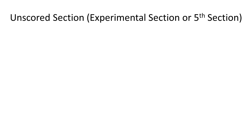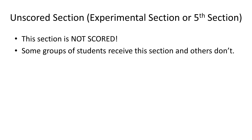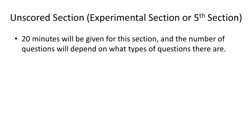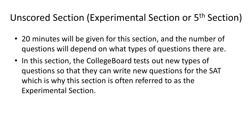Now I'm going to be talking about the unscored section, also called the experimental section or fifth section. This section is not scored. Some groups of students receive this section and others don't. All the questions will be from one of the following parts of the test: the Reading Test, the Writing and Language Test, the Math Test No Calculator, or the Math Test Calculator. However, there will be new questions. 20 minutes will be given for this section and the number of questions will depend on the types of questions. The College Board tests new question types here so that they can write new questions for the SAT, which is why it's often referred to as the experimental section.